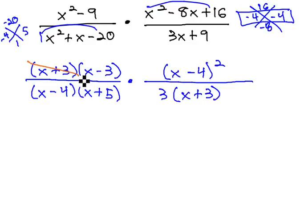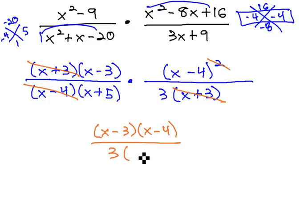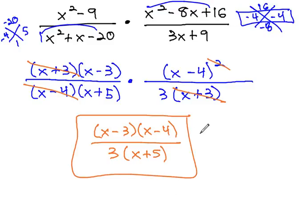Now, we see a common factor of x plus 3 in the numerator and denominator. Similarly, an x minus 4 can divide out one of the x minus 4's. What's left, then, is x minus 3, times x minus 4, over 3, times x plus 5, for our final solution.